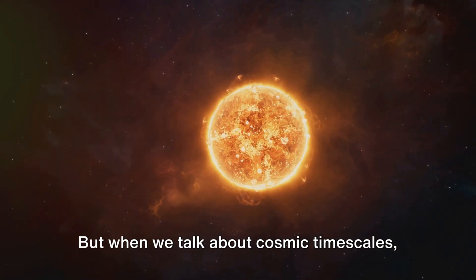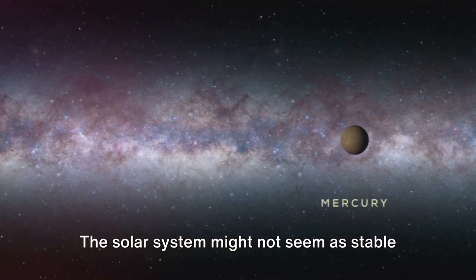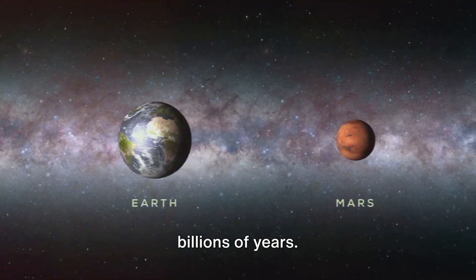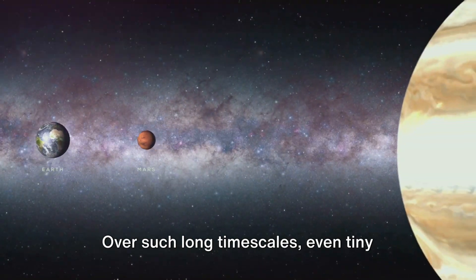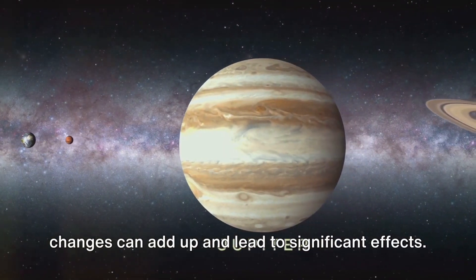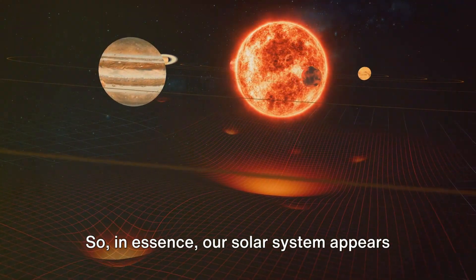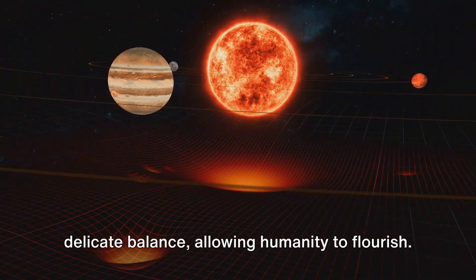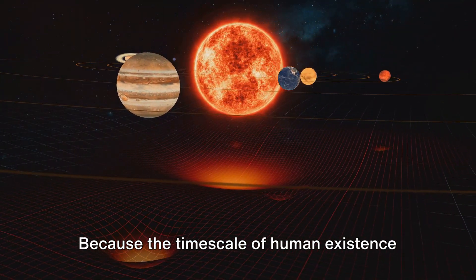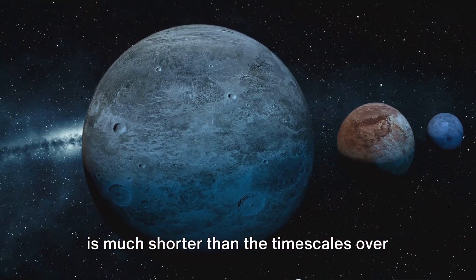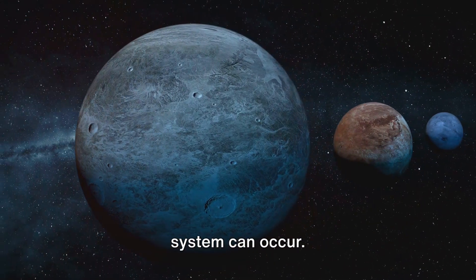But when we talk about cosmic timescales, things can look a bit different. The solar system might not seem as stable if we consider periods of millions or billions of years. Over such long timescales, even tiny changes can add up and lead to significant effects. So, in essence, our solar system appears stable because it is in a state of delicate balance, allowing humanity to flourish. Because the timescale of human existence is much shorter than the timescales over which significant changes in the solar system can occur.